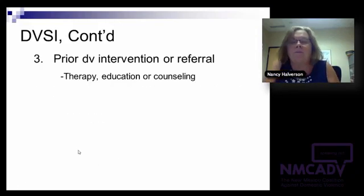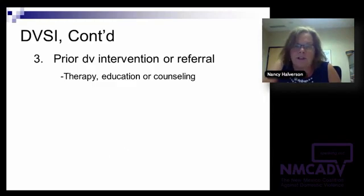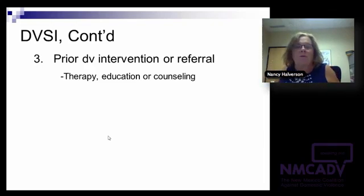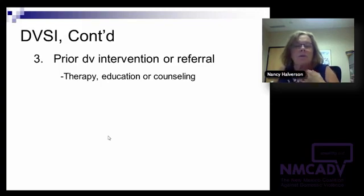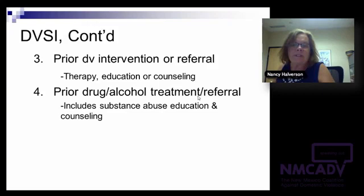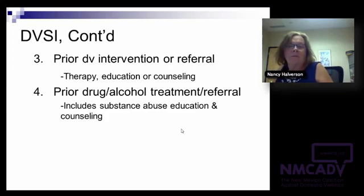Item four is prior drug and alcohol treatment referrals. We've long recognized the correlation between drug or alcohol use and being on probation. Note that I used the word 'correlation' rather than 'causal,' because we don't think of drug or alcohol use as causing domestic violence. This includes substance abuse education and counseling. We can often infer a treatment referral from certain kinds of criminal history, such as DWIs.